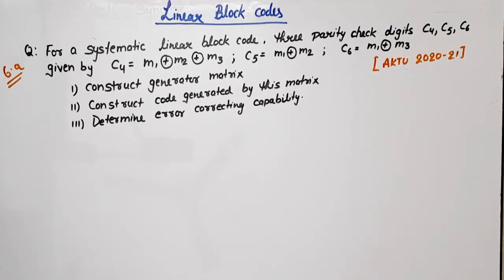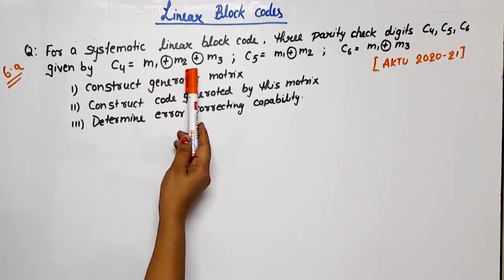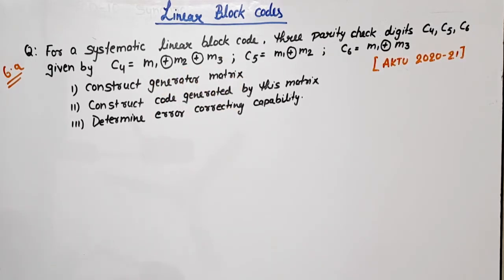Hello everyone. In this video lecture on information theory, coding, or digital communication, I am going to discuss one example of linear block code. This topic is common for both subjects. I have taken this question from the AK2 last year paper 2020-21. According to this question, for a systematic linear block code, three parity check digits C4, C5, C6 are given by: C4 = M1 XOR M2 XOR M3, C5 = M1 XOR M2, C6 = M1 XOR M3, where XOR means modulo-two sum.